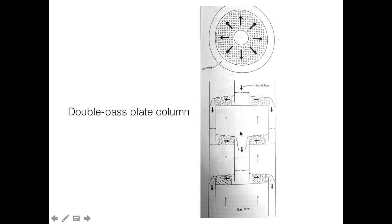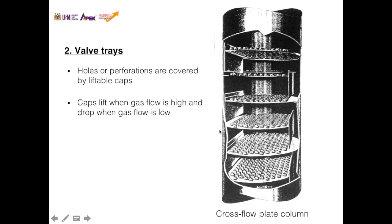This is the same type of perforated or sieve trays applied to a double pass absorption column. The liquid flows in from the middle of the column, moves to the left and right, gets contacted by gas flowing through the holes of the trays, and flows down as a downcomer.